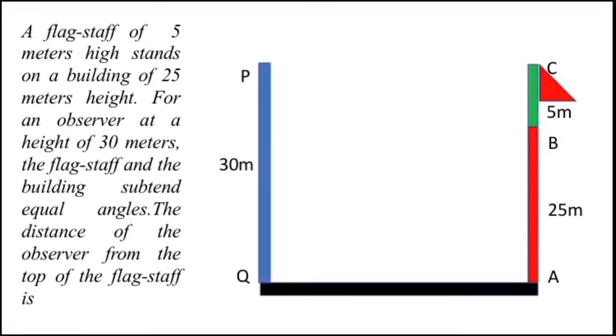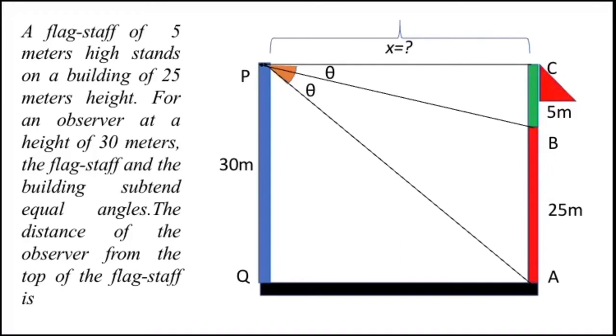There is an observer at a height of 30 meters at point P, from where the building AB and flagstaff BC subtend equal angles, which we call θ. The distance between the top of the flagstaff to the observer is x, which we need to find out.